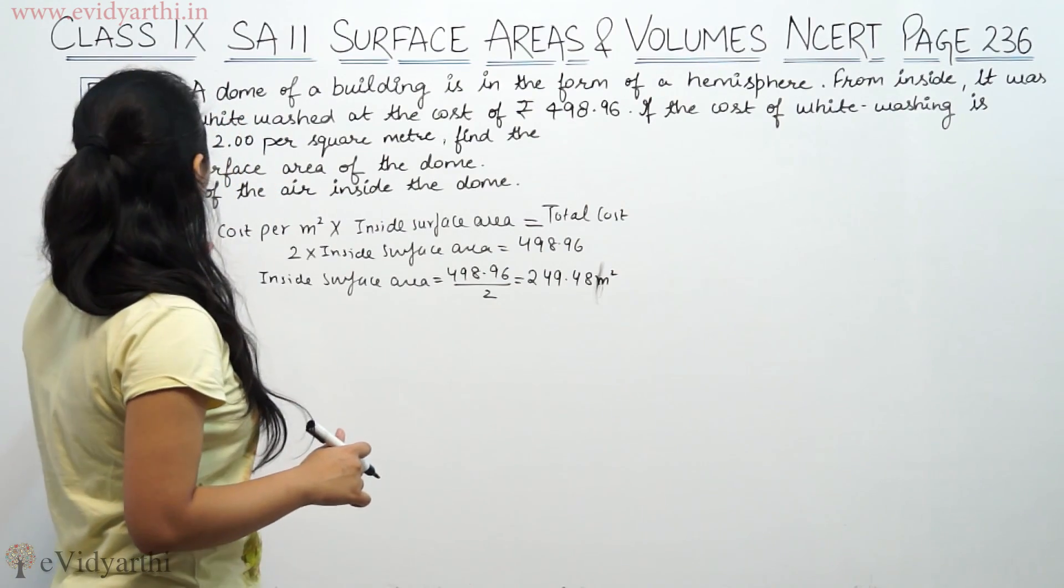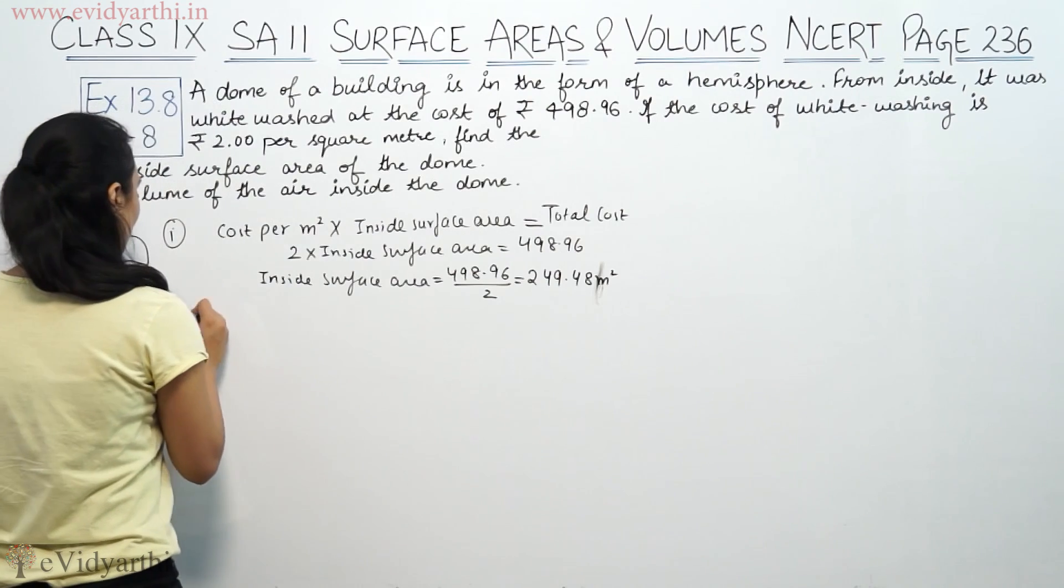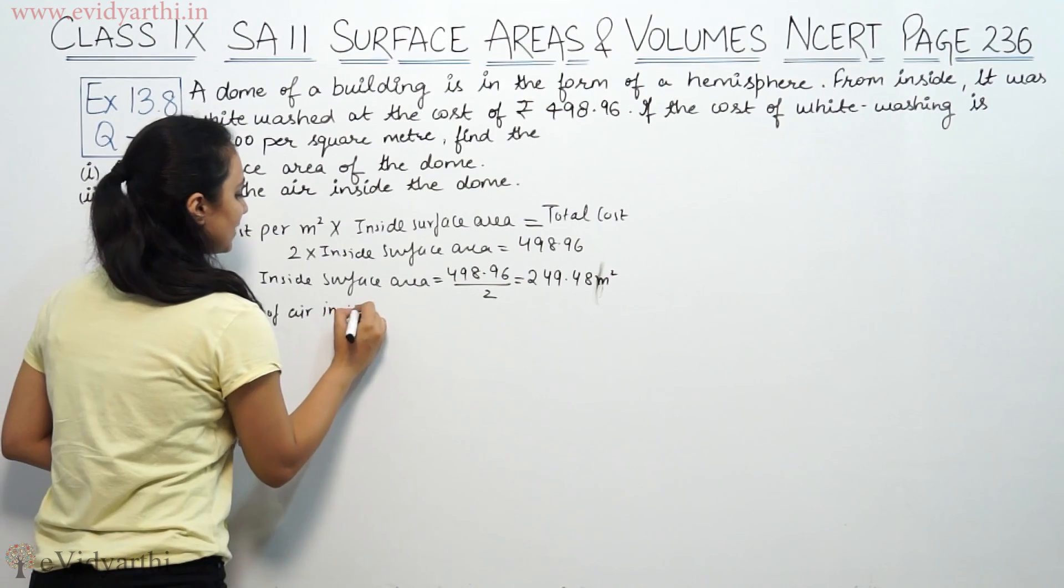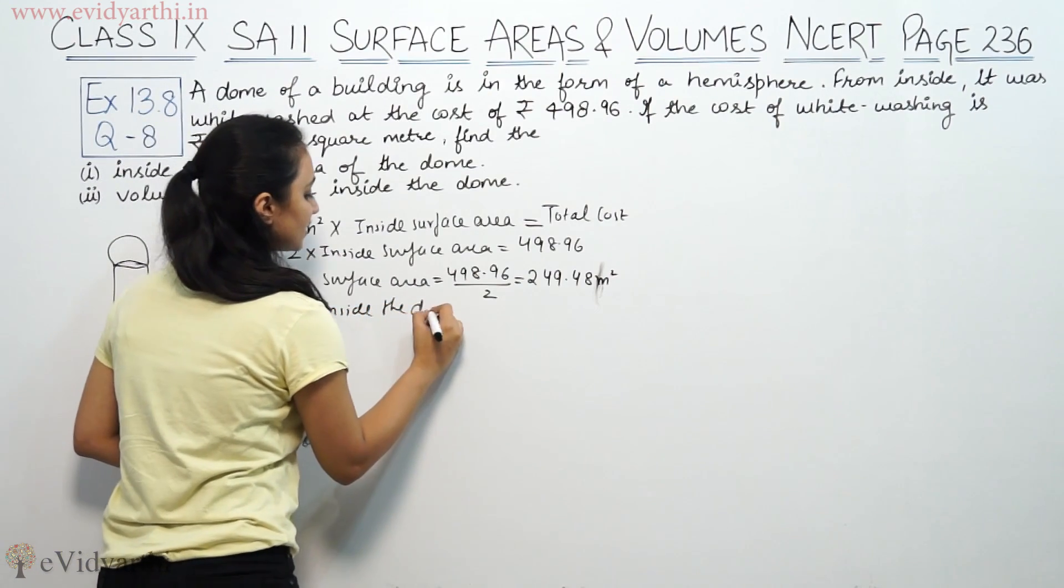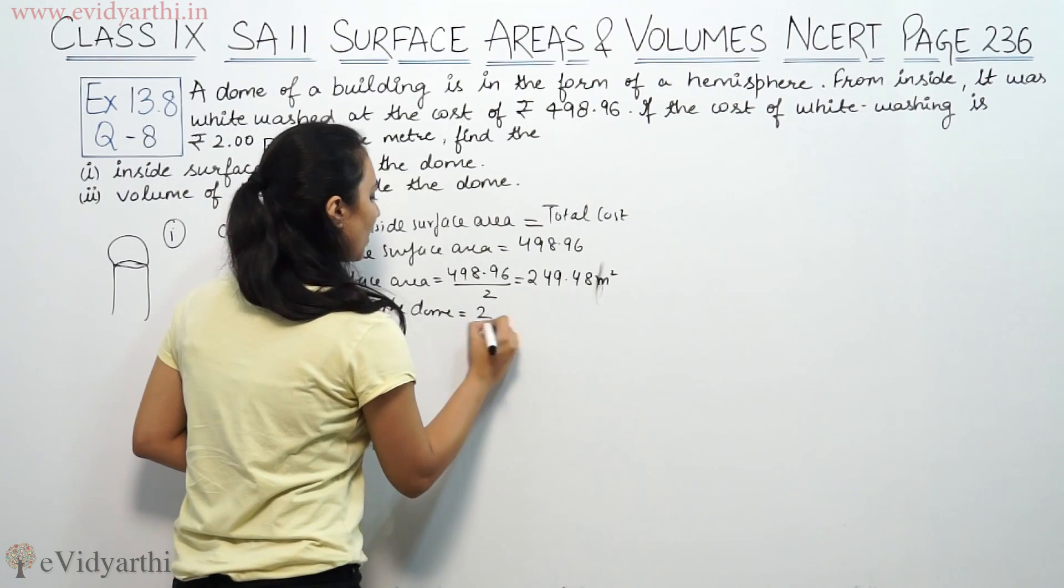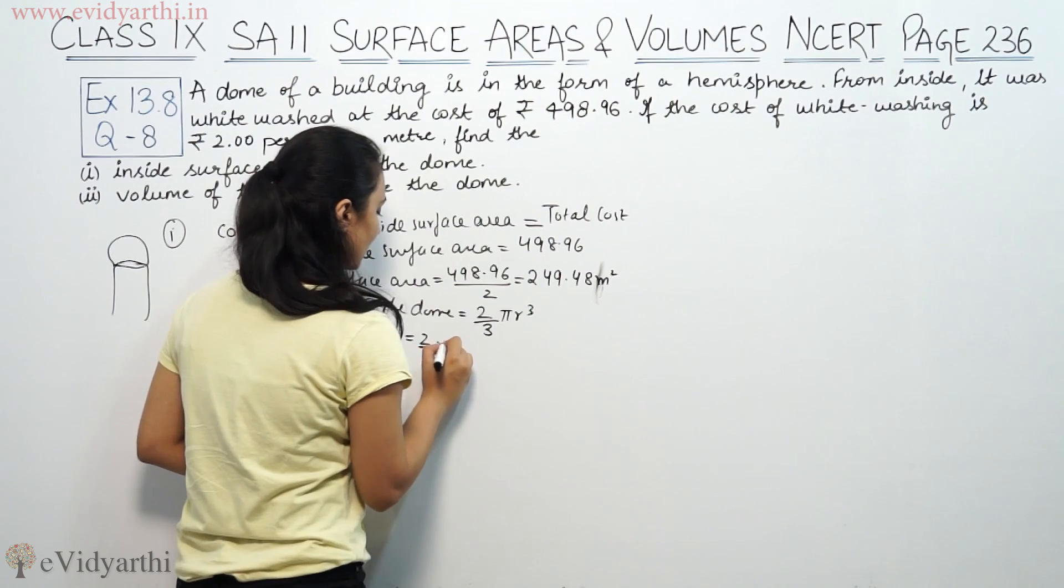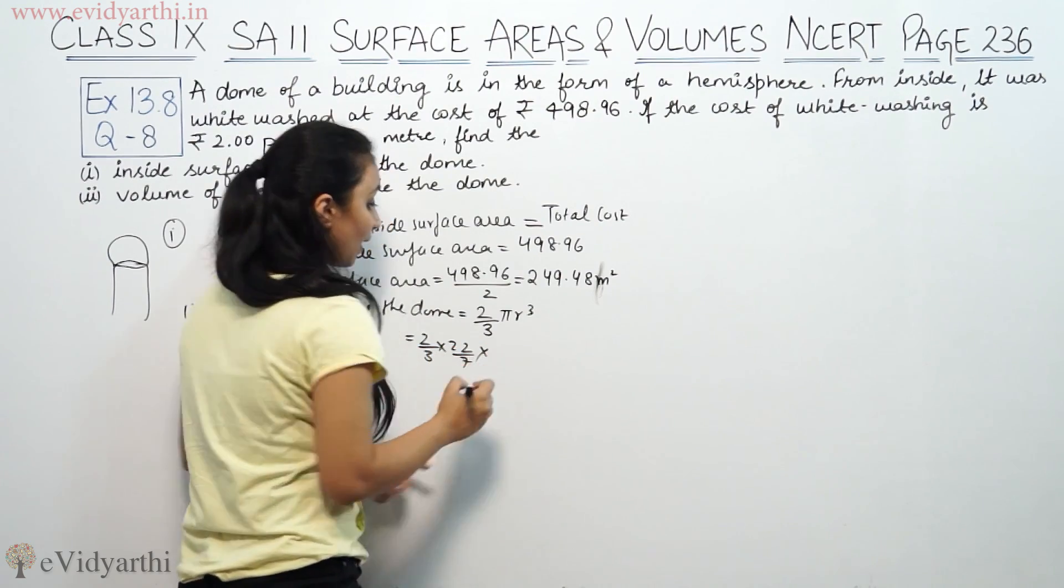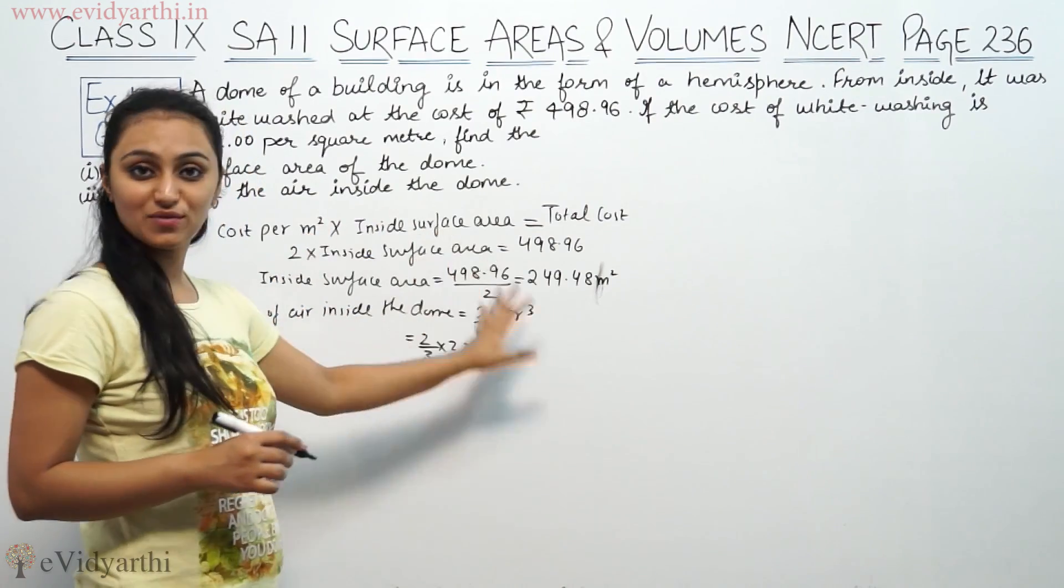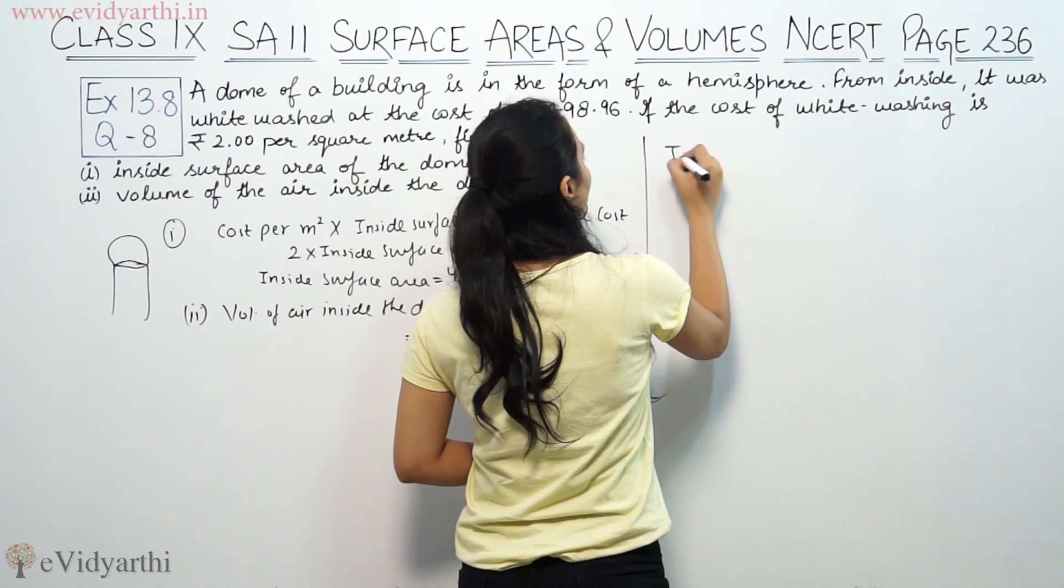Second part is volume of air inside the dome, which is 2/3 π r³. Now the radius has not been given in the question. We will use the inside surface area to find it.